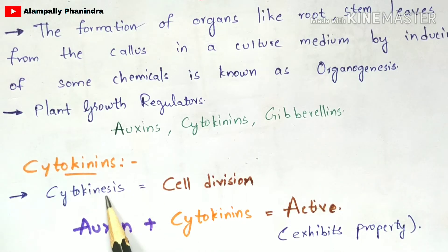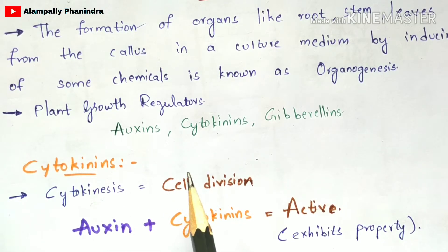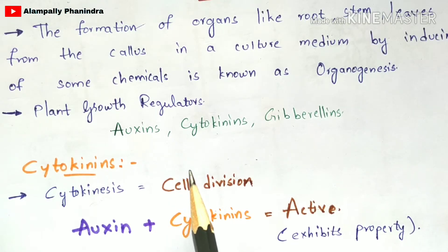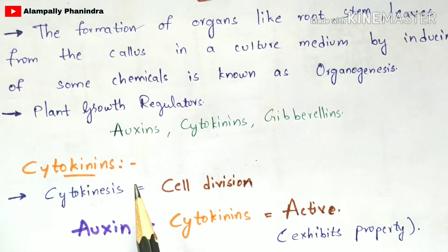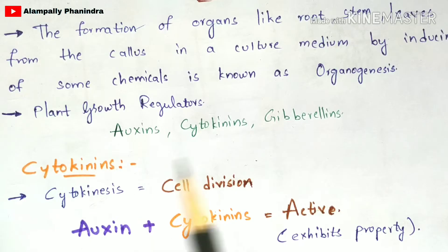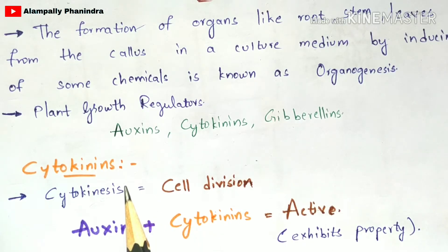Cytokinesis is cell division. When you take an explant and place it in a culture medium containing cytokinins and other plant growth regulators, the explant absorbs nutrients from the medium and undergoes cell division. Once it undergoes division, it forms the callus. You can understand this process better by watching the previous video on plant tissue culture.